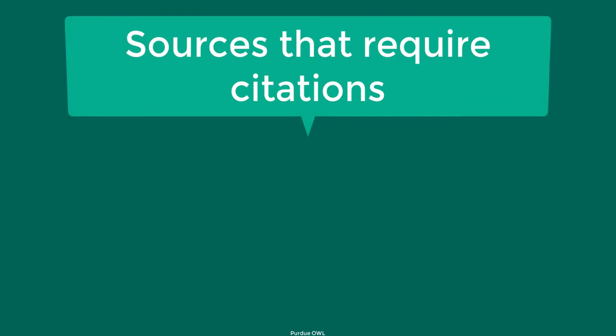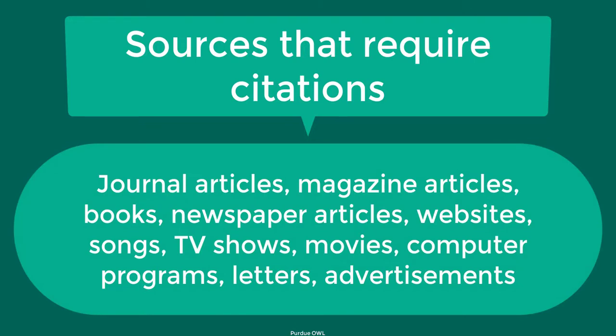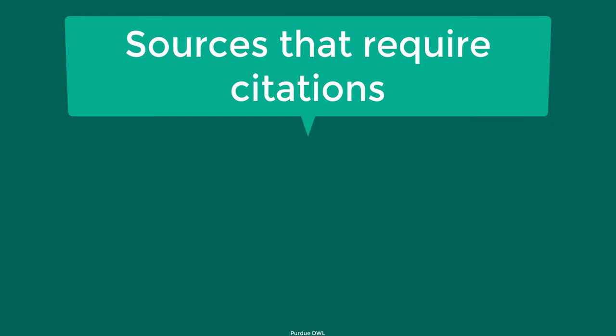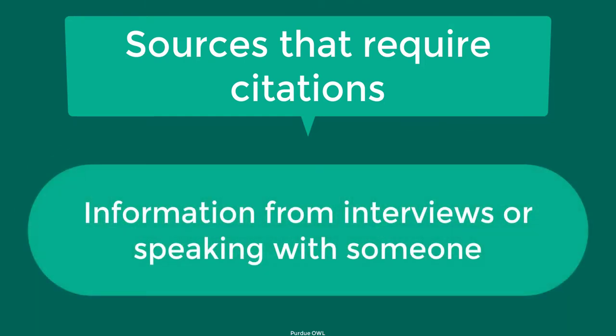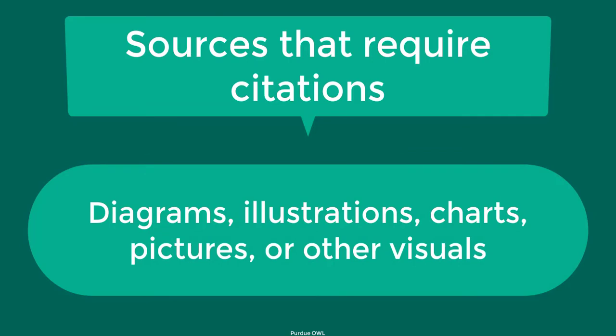Here are some guidelines on the type of information that requires citations. Any words or ideas presented in a journal, magazine, book, newspaper, website, song, TV show, movie, computer program, letter, or advertisement. You also need to cite information you gain through interviewing or speaking with another person face-to-face, over the phone, or in writing. When you use any diagrams, illustrations, charts, pictures, or other visuals.